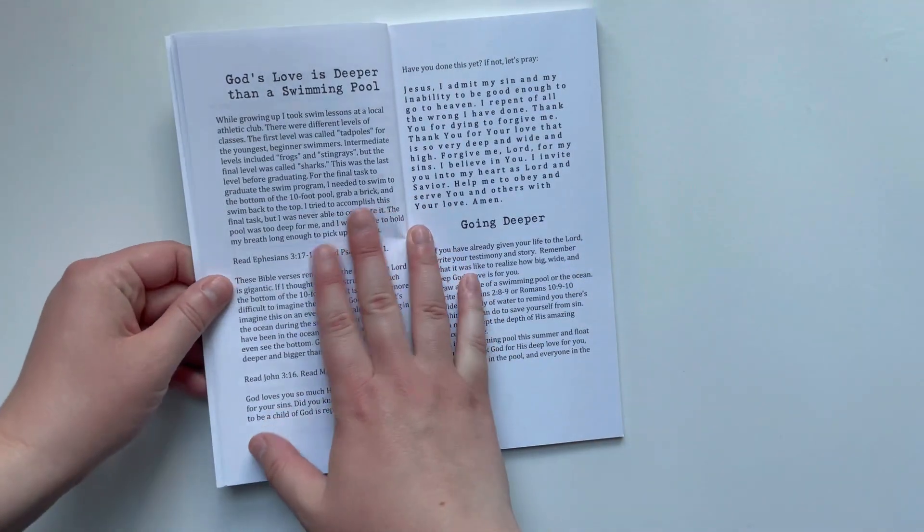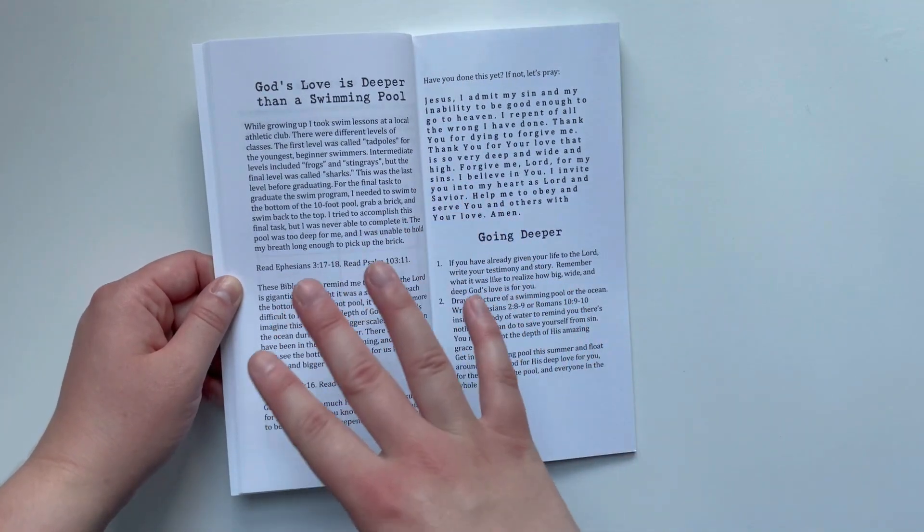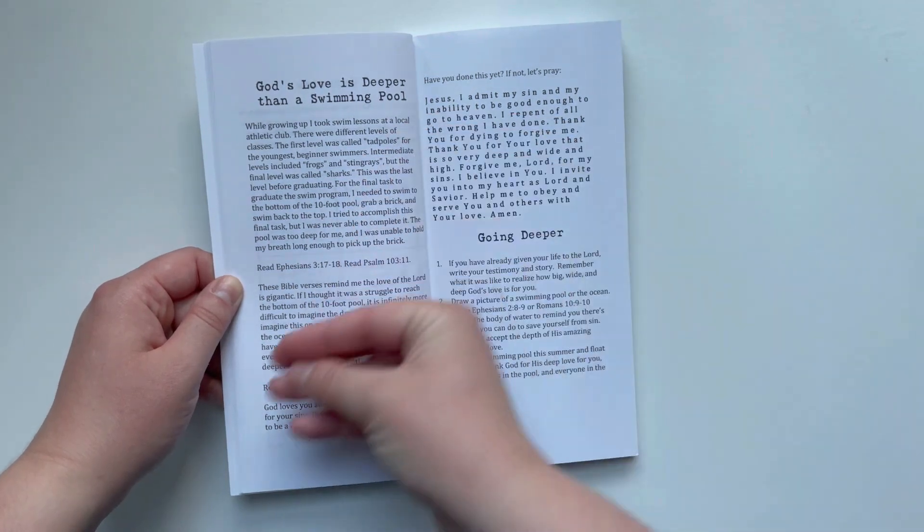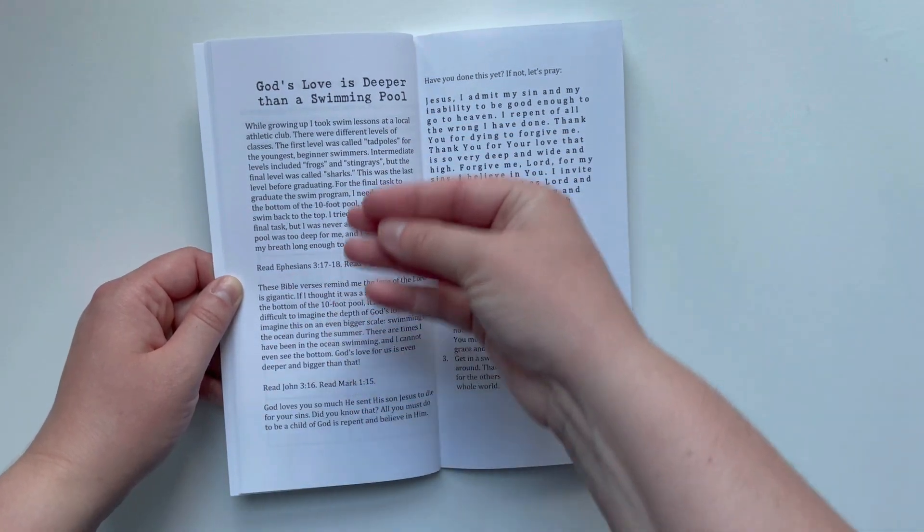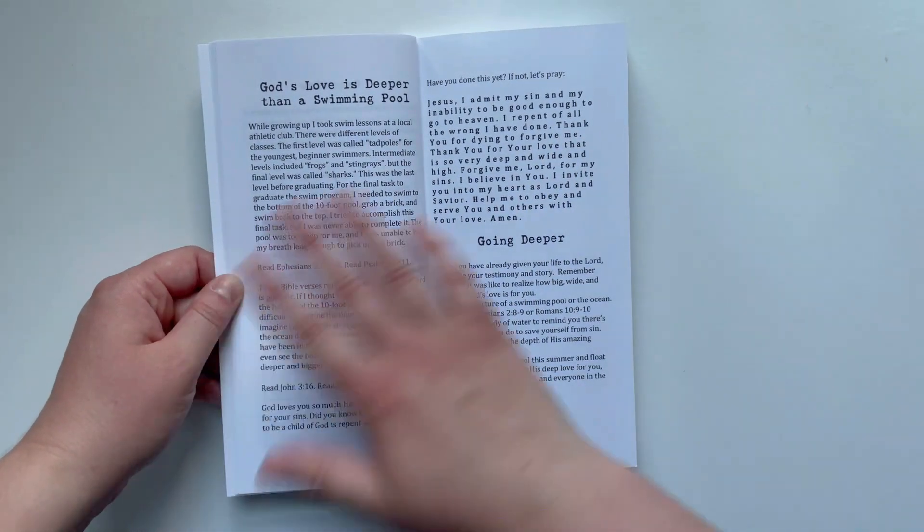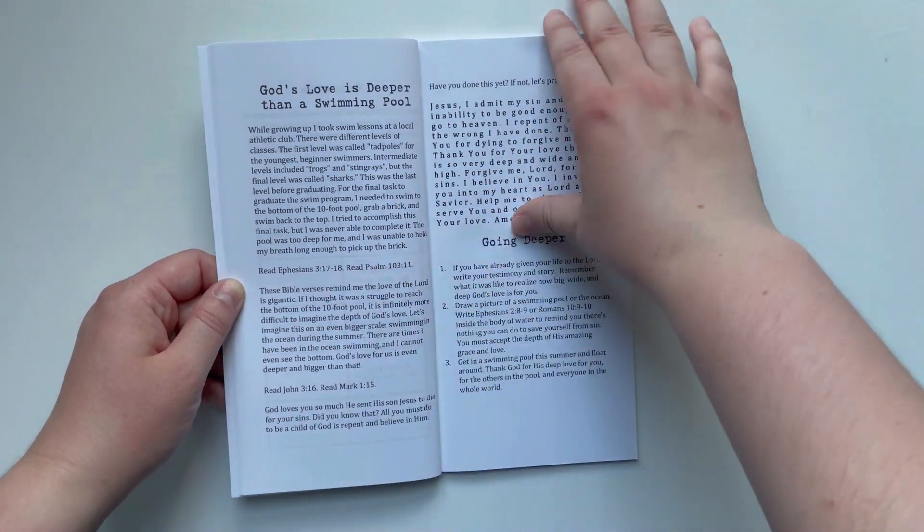All right, so the first devotion is called God's Love is Deeper than a Swimming Pool. In here I connect this story from growing up and swimming in the deep end of the swimming pool with God's love being deeper and wider than the pool, deeper and wider than the ocean. That's how much He loves you.